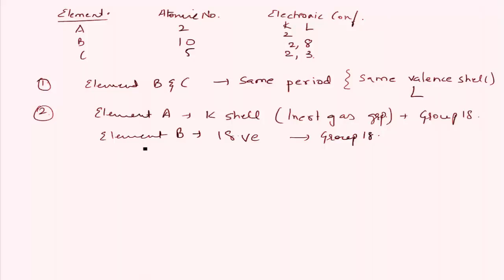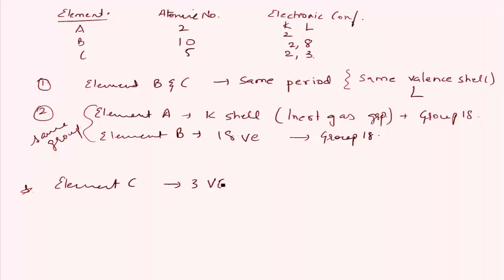So elements A and B are in the same group, and elements B and C are in the same period. Element C has 3 valence electrons. Since it has more than 2 valence electrons, its group number is 3 plus 10, that is group 13.